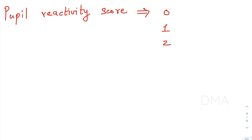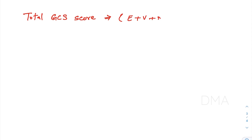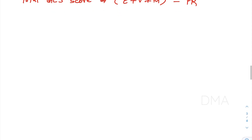The total GCS score is calculated using the formula: E + V + M − PR, where E is eye opening response, V is verbal response, M is motor response, and PR is the pupil reactivity score. For example, if a patient scores one in each of eye opening, verbal, and motor responses, and both pupils are unreactive (PR = 2), the total score would be 3 − 2 = 1.